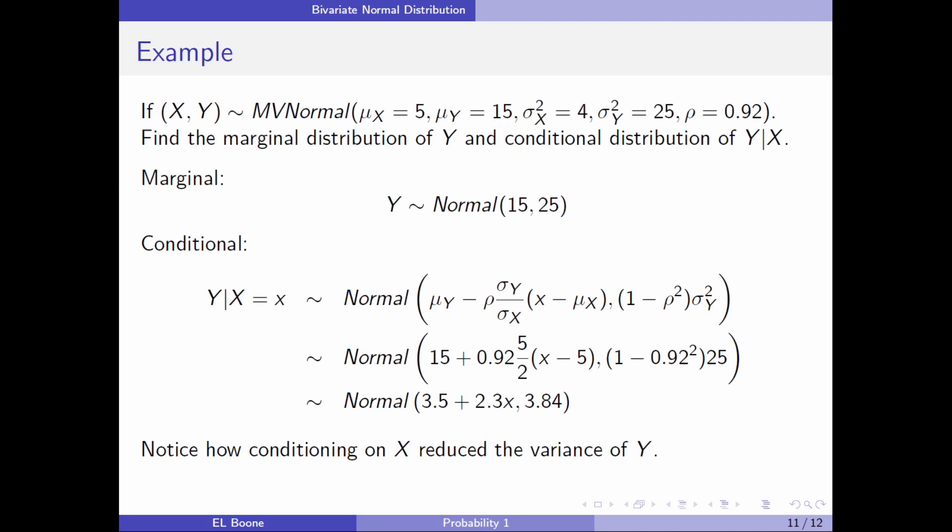I hope that makes sense. The more information you have, the less uncertainty you should have. This is an example of that idea. Remember, we're using conditional probability. We've shrunk the whole space down, so we should have less uncertainty than we did before. And variance is a measure of uncertainty.